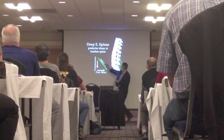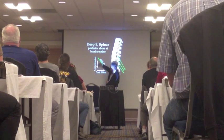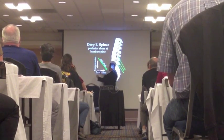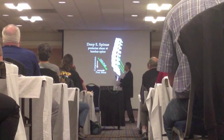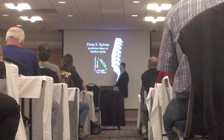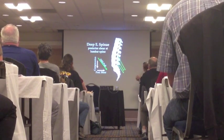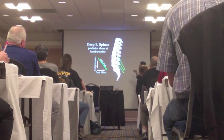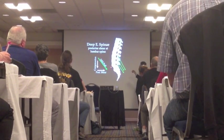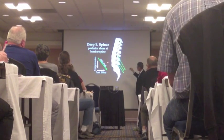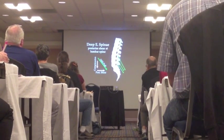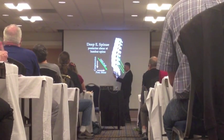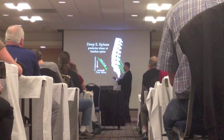If you take that vector of the deep erector spinae muscle and resolve it into its component vectors, it squeezes the vertebrae together. It doesn't create posterior shear as much as it checks anterior shear. Because we're upright and gravity is pulling on the spine, and because of the lordotic spine, there's always this shear force on the spine — so we have connective tissue restraints like ligamentous tissue and joint orientation to help check anterior shear.